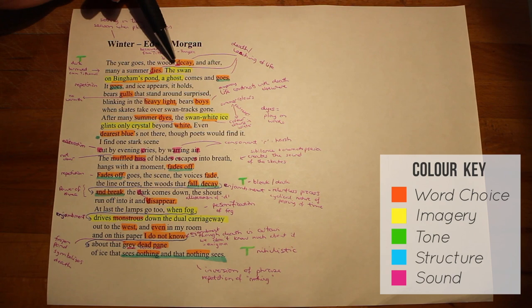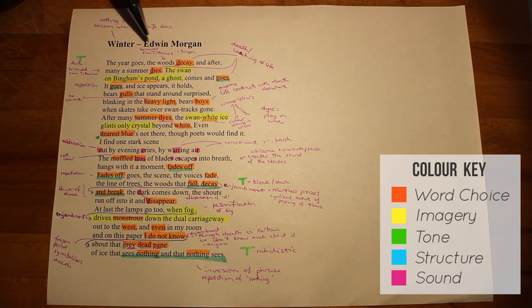The phrase 'the woods decay' is actually borrowed from a poem by Alfred Lord Tennyson called Tithonus, in which the character wishes for eternal life but forgets to qualify that he wants to be eternally young.